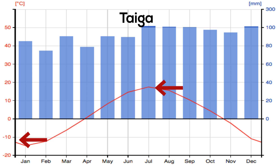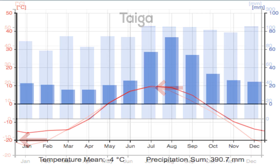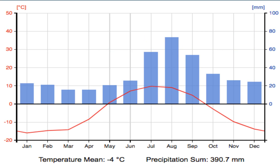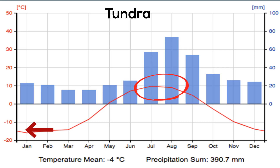And finally, the tundra. The tundra is where we find the coldest temperatures. It only warms up in the summer to 10 or 15 degrees Celsius. Most of the rain is in the summer, but it's pretty steady.